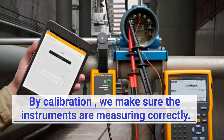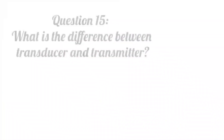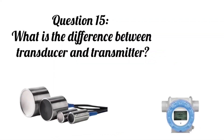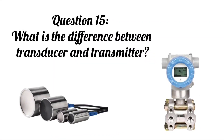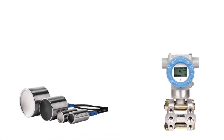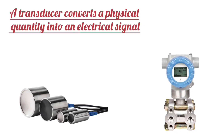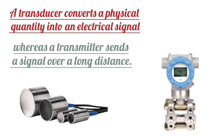Question 15: What is the difference between a transducer and a transmitter? A transducer converts a physical quantity into an electrical signal, whereas a transmitter sends a signal over a long distance.